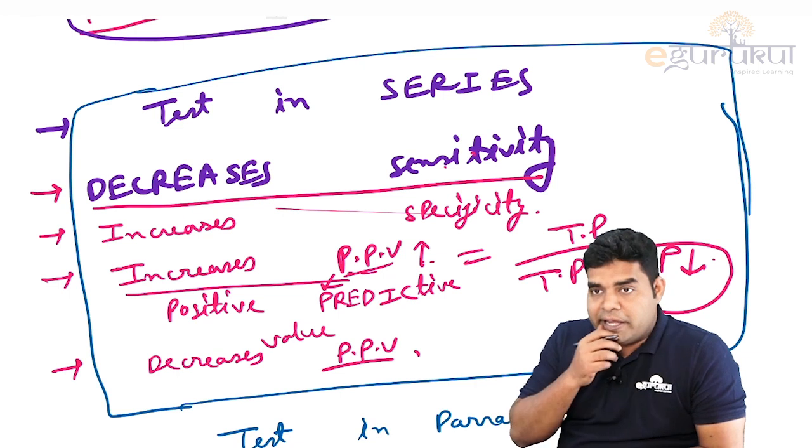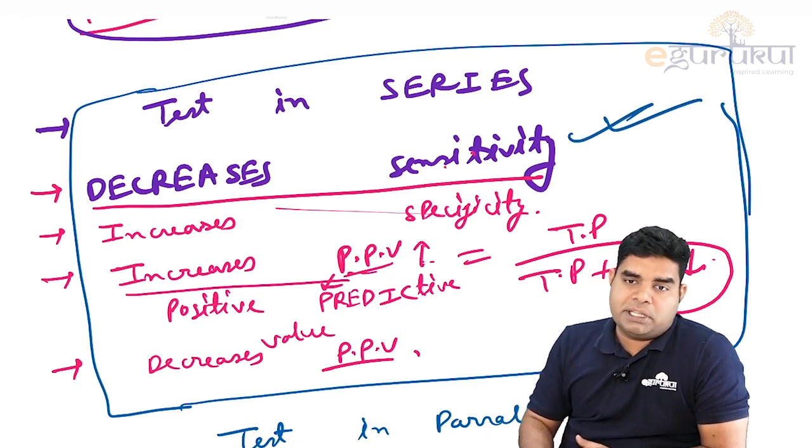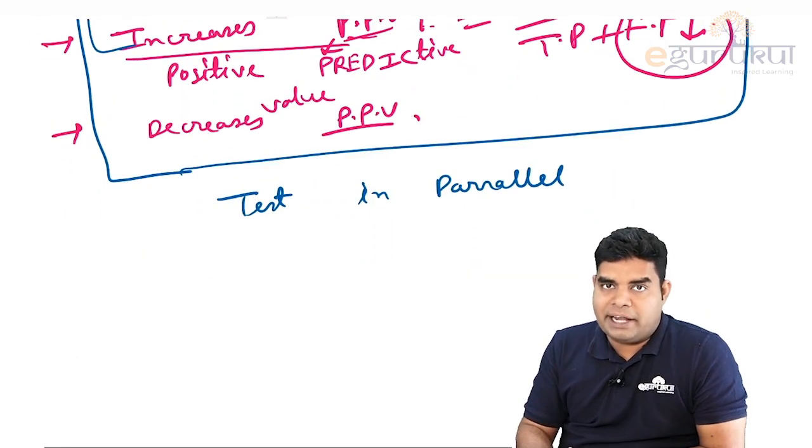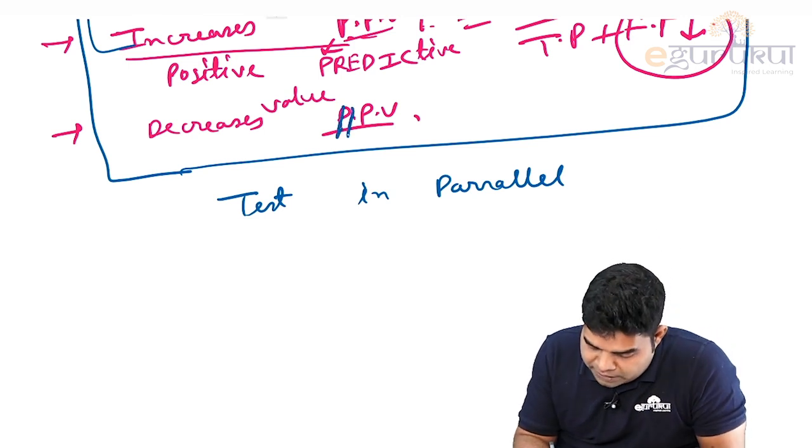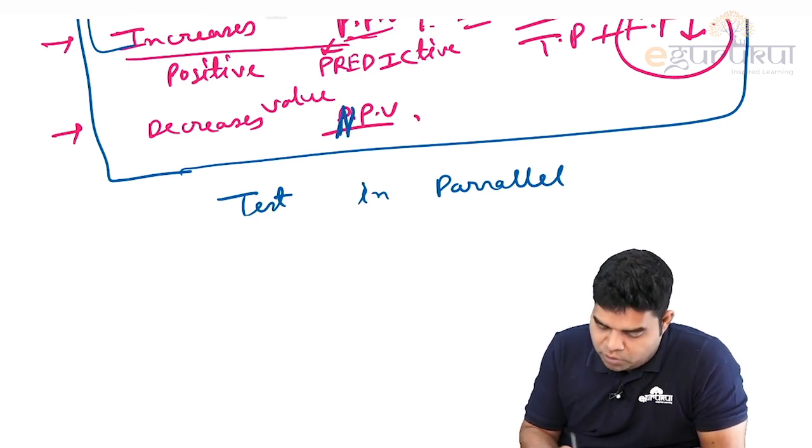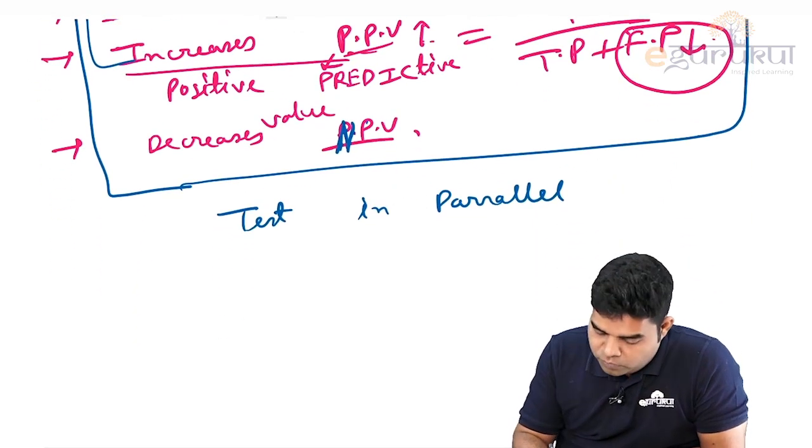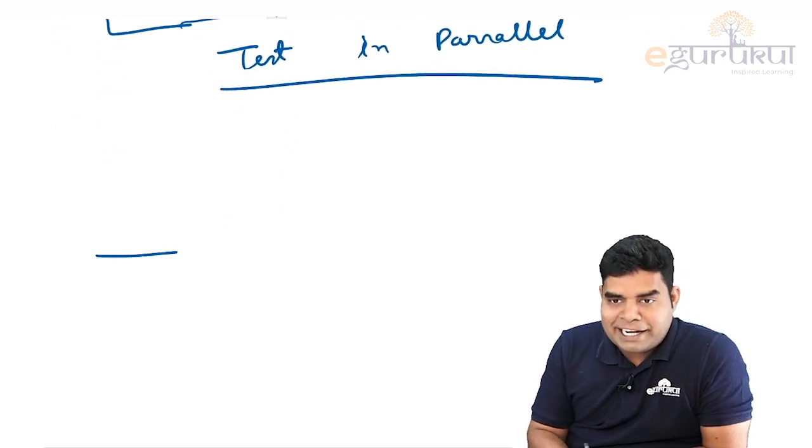If you know what is happening with sensitivity, then you can remember the remaining three also, because specificity and PPV are just opposite, and NPV is the same as sensitivity. Here, NPV decreases and PPV increases.